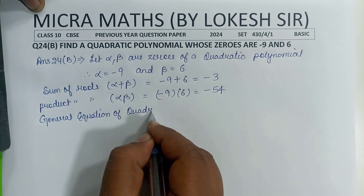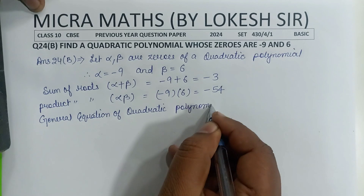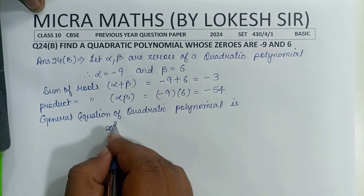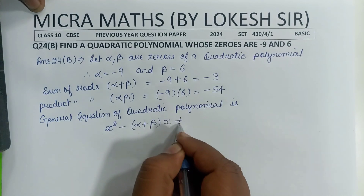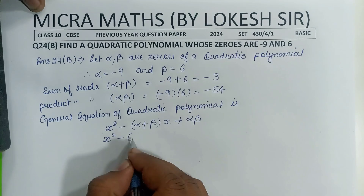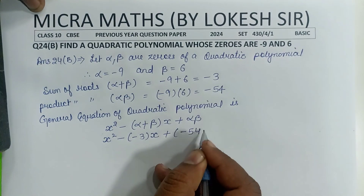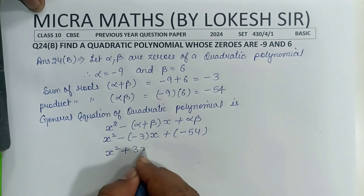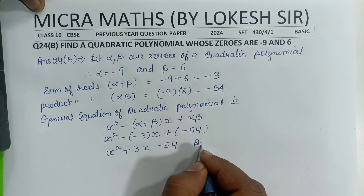The general equation of a quadratic polynomial is x squared minus (alpha plus beta)x plus alpha beta. Substituting the values: x squared minus (-3)x plus (-54), which gives x squared plus 3x minus 54. This is the answer.